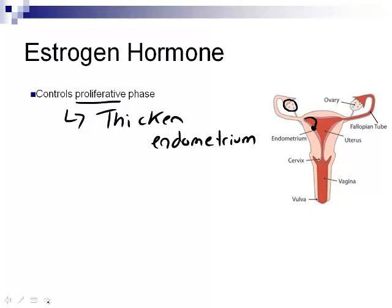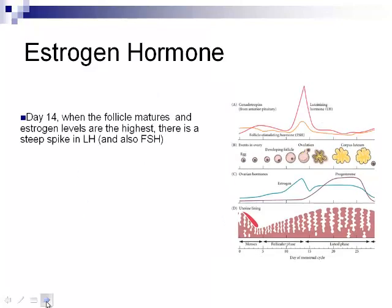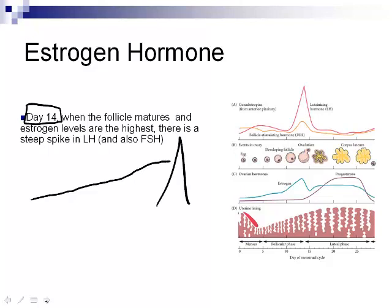People with a thin endometrial wall cannot conceive as easily because the developing zygote needs a thick spot to attach. On day 14, the follicle matures and is released. The reason for release is that estrogen gradually builds up; once it reaches its highest point, it causes a big spike in LH. That LH spike is responsible for causing the follicle to rupture. As you can see, estrogen levels increase until the peak, which causes the LH spike — and that LH spike corresponds with ovulation.